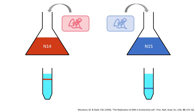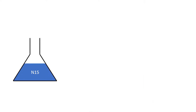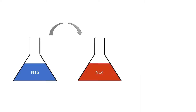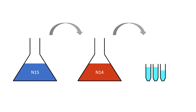With the reference observations made, it is time for the actual experiment. E. coli that have been growing in N15 media is transferred to N14 media to grow, with small volumes extracted periodically. With a doubling time of 20 minutes, the number of replication cycles can be calculated from the time of extraction.